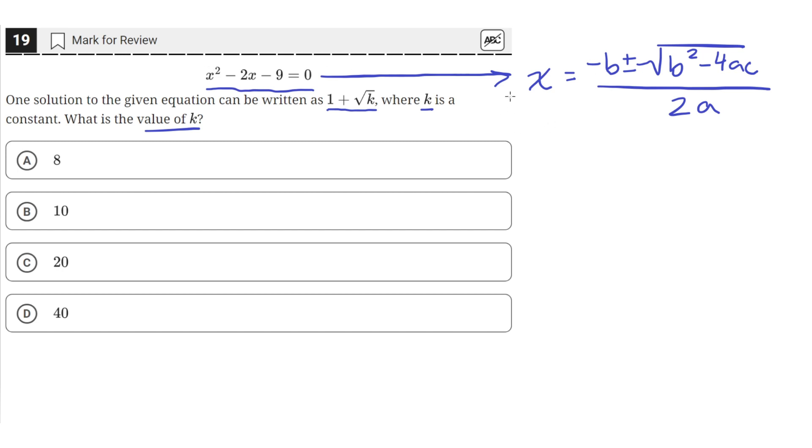This is for a quadratic of the form ax squared plus bx plus c equals 0. So here a is going to be 1, since the coefficient of x squared is just 1. b is going to be negative 2, and c is going to be negative 9.